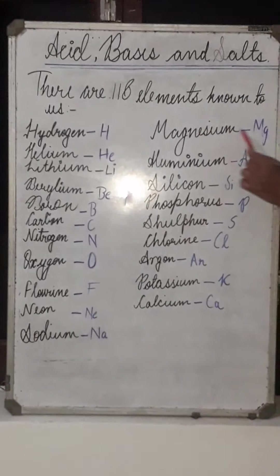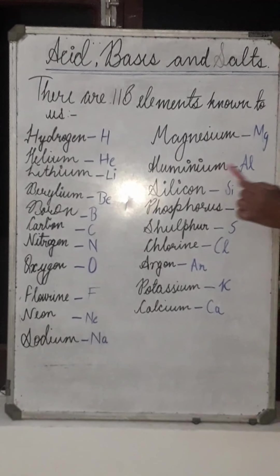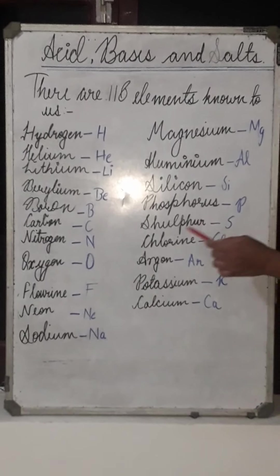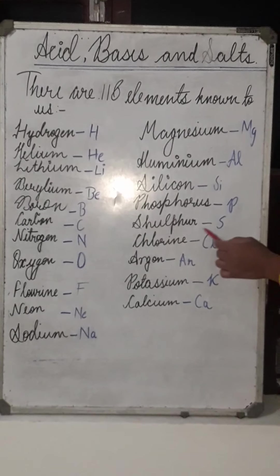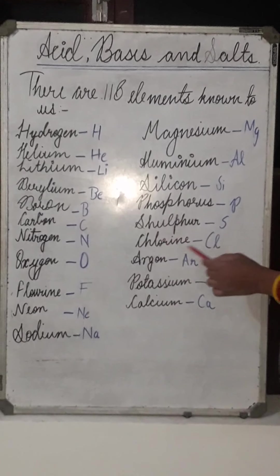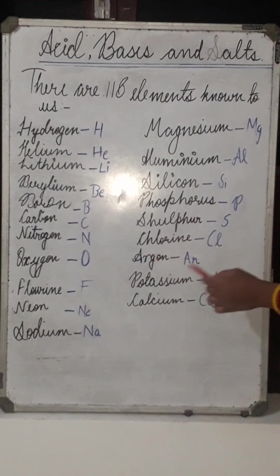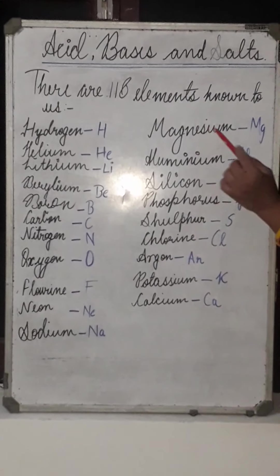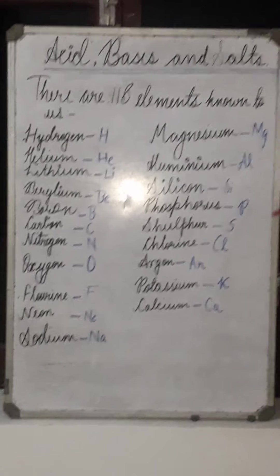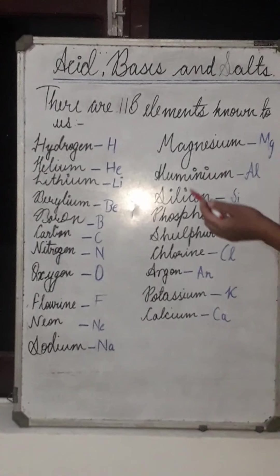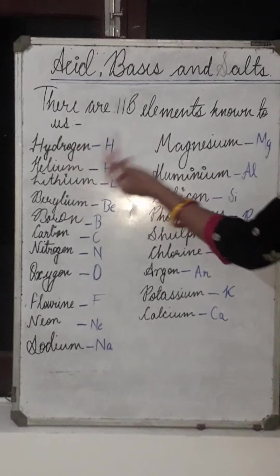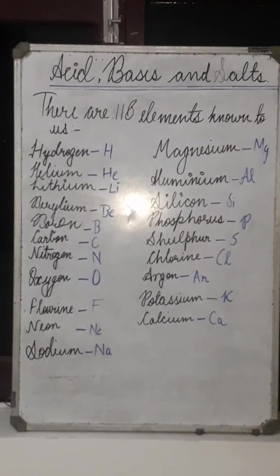Sodium, Magnesium, Aluminium, Silicon, Phosphorus, Sulphur, Chlorine, Argon, Potassium and Calcium. You should know about these elements and you should learn their symbols and their names also.